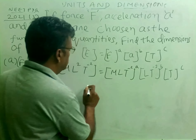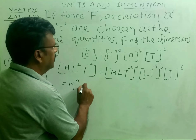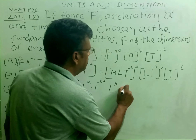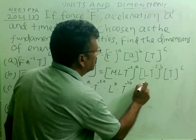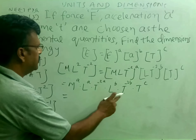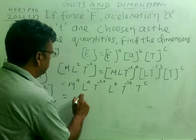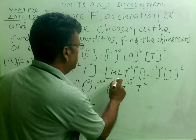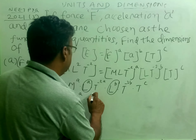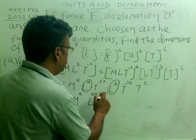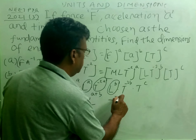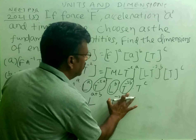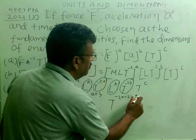So this becomes: M to the power a, L to the power a, T to the power minus 2a, into L to the power b, T to the power minus 2b, into T to the power c. Combining, we write: M to the power a, L to the power (a plus b), and T to the power (minus 2a minus 2b plus c).